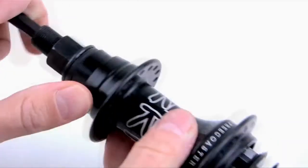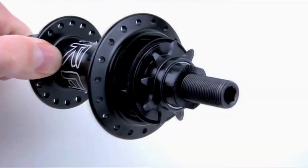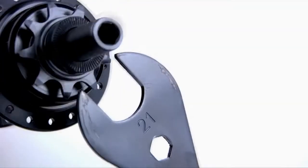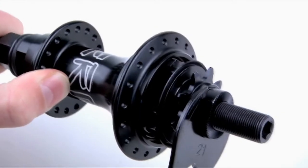Tighten with the 8mm Allen wrench inserted into the non-drive side of the axle and the 21mm spanner wrench on the cone nut.